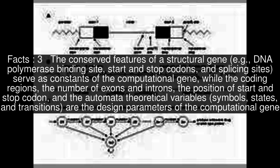while the coding regions, the number of exons and introns, the position of start and stop codon, and the automata theoretical variables (symbols, states, and transitions) are the design parameters of the computational gene.